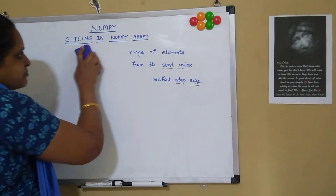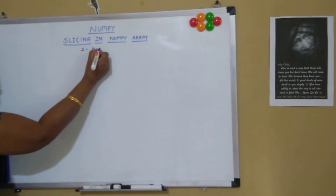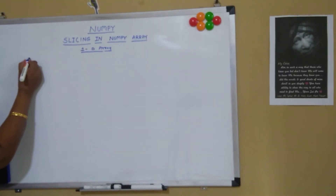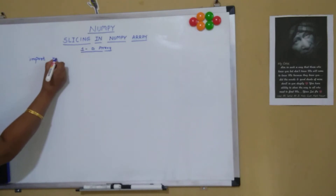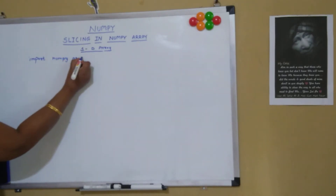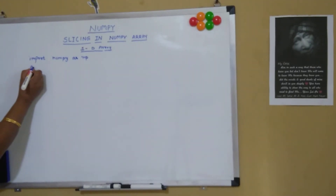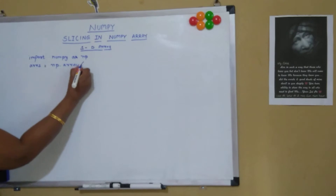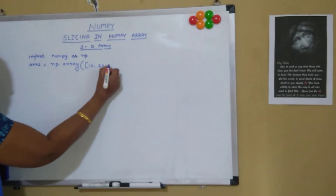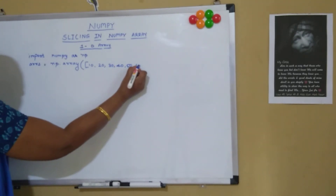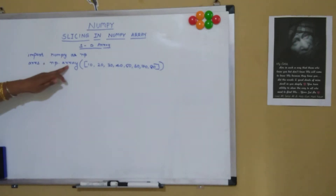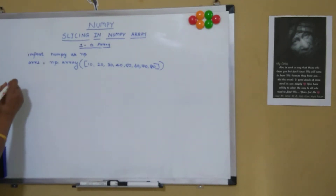Now let's see an example with a one-dimensional array. First, I'll import NumPy as np, then define my_array1 as np.array with elements 10, 20, 30, 40, 50, 60, 70, and 80. This is our one-dimensional array stored in array1.